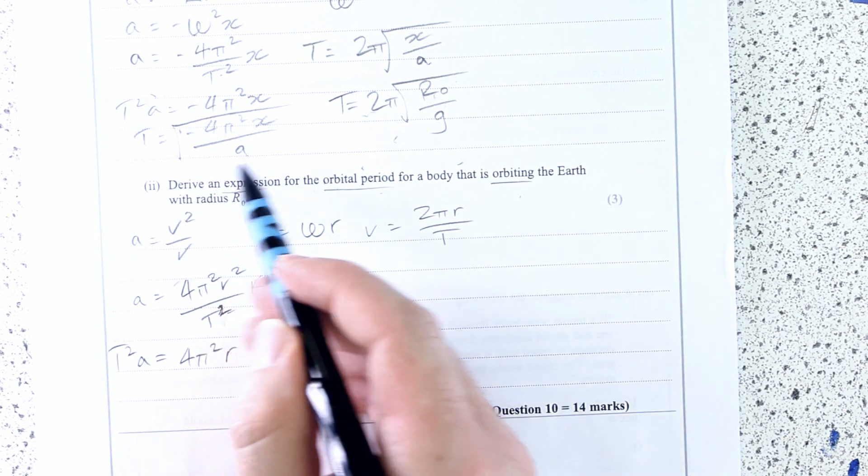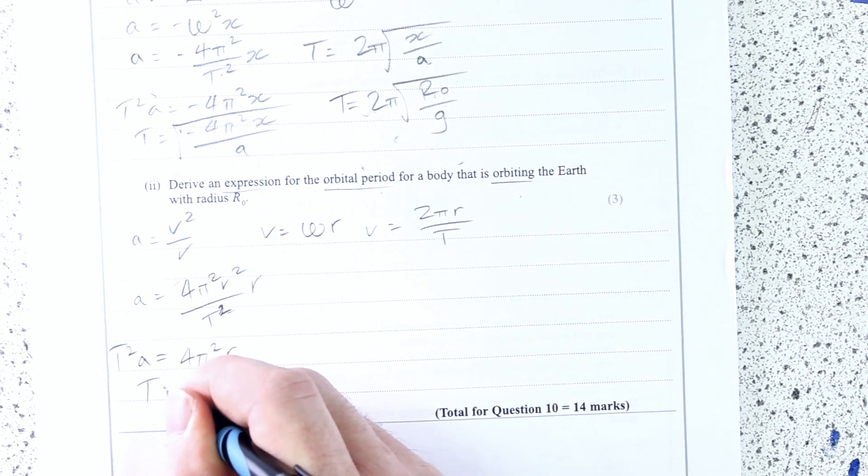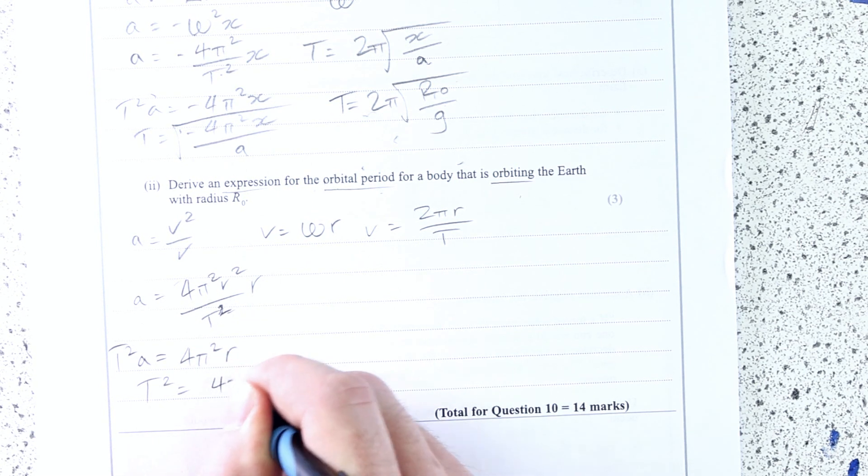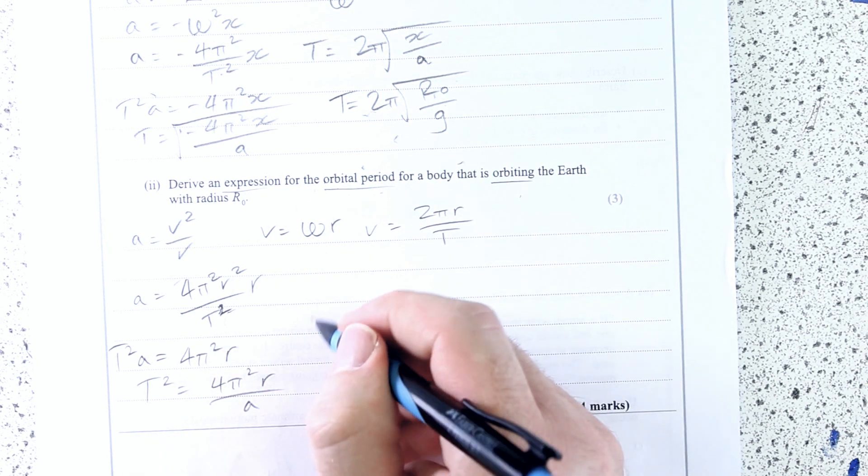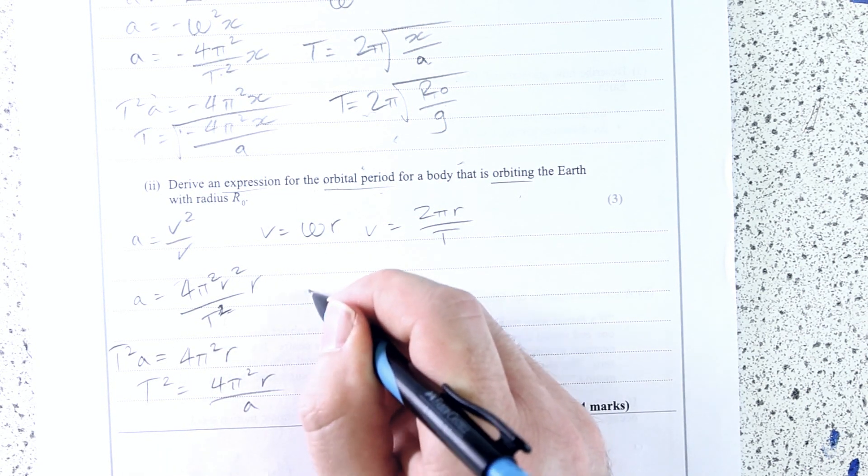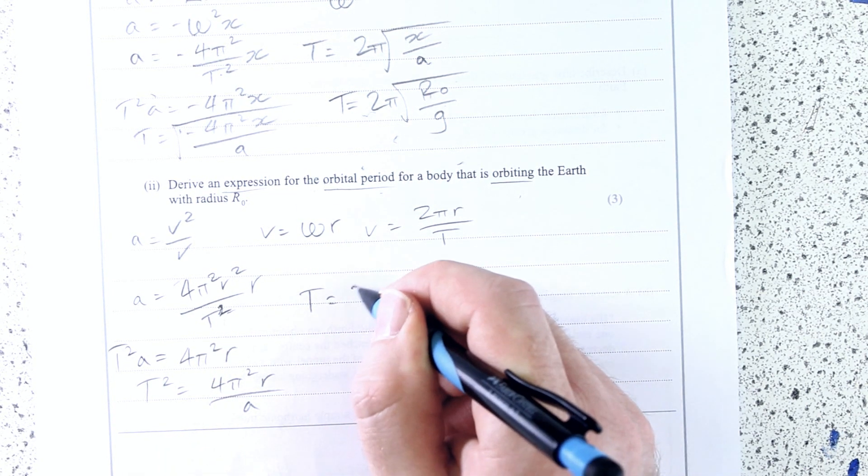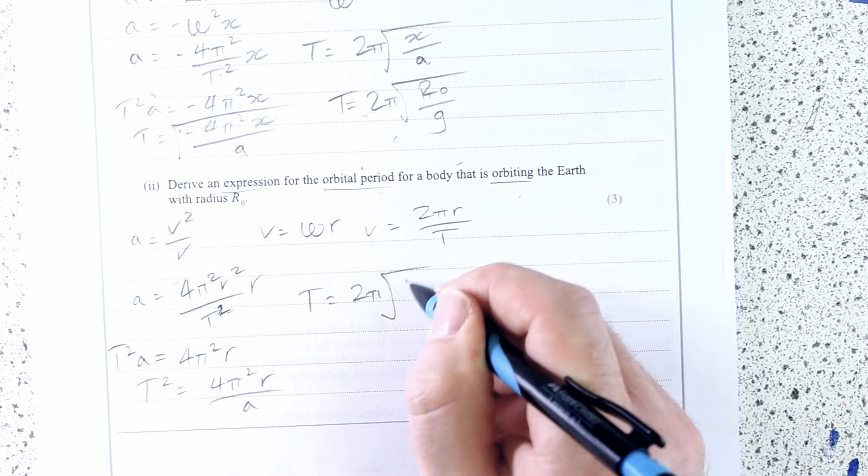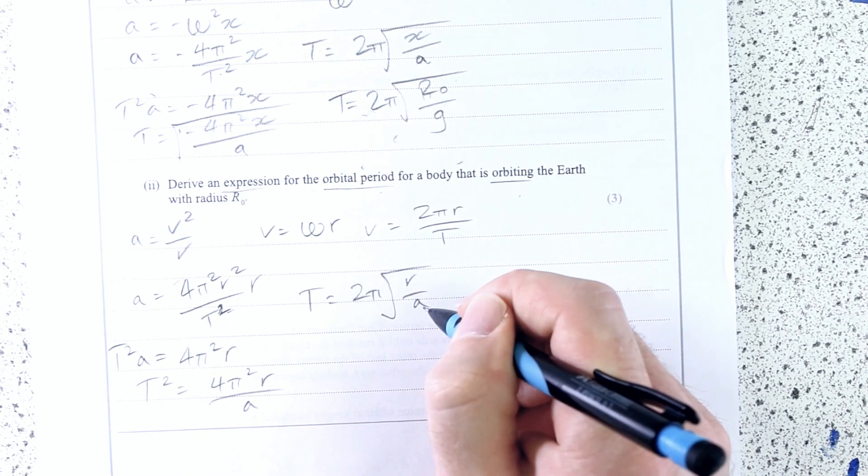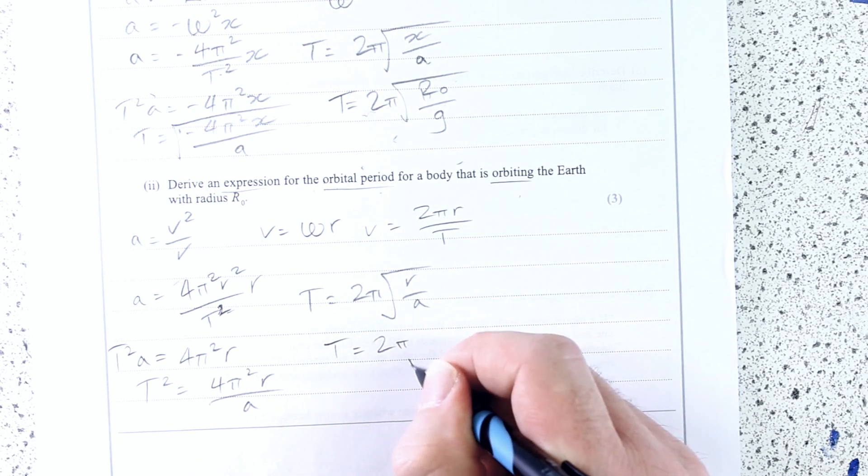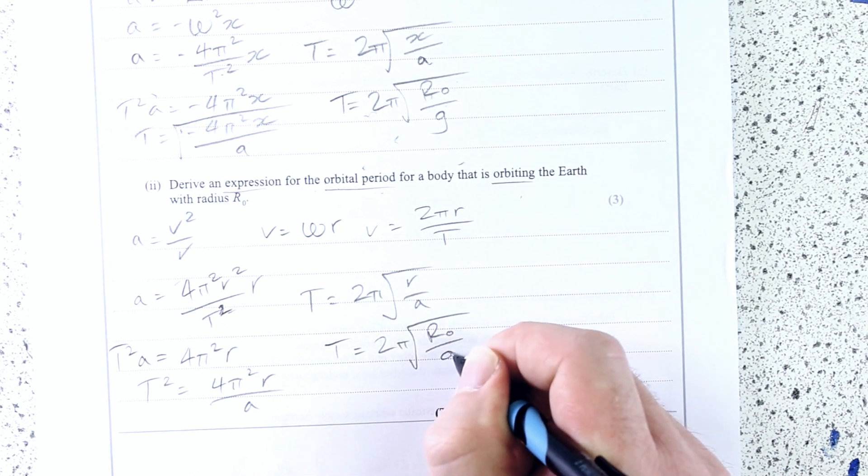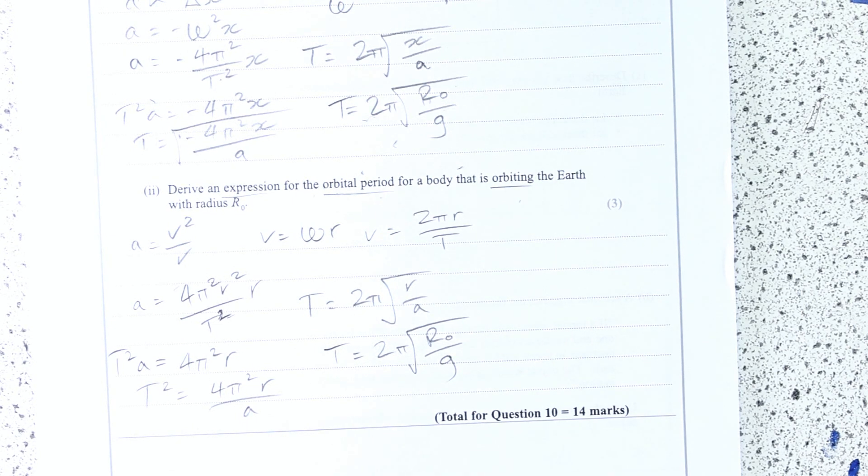And then I'm going to... Ah! It's the same math as this, isn't it? So t² is 4π² r over a. I know you could do this a little bit quicker, especially as you've previously done it. t is 2π root r over a, where r and a are r naught and g. So it's the same kind of math.